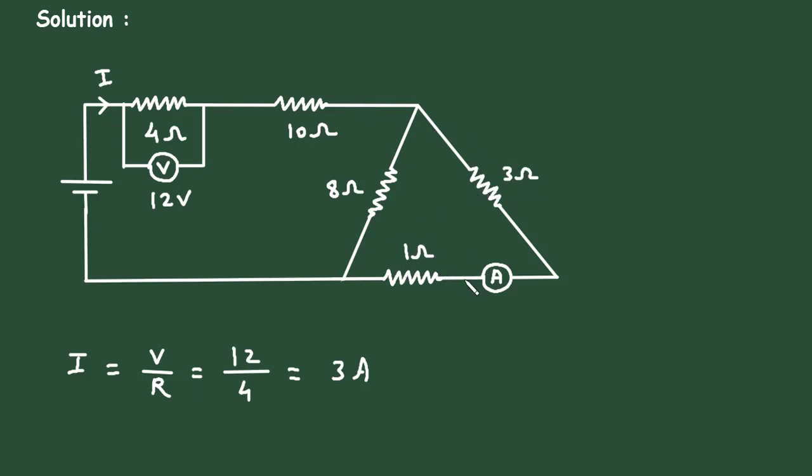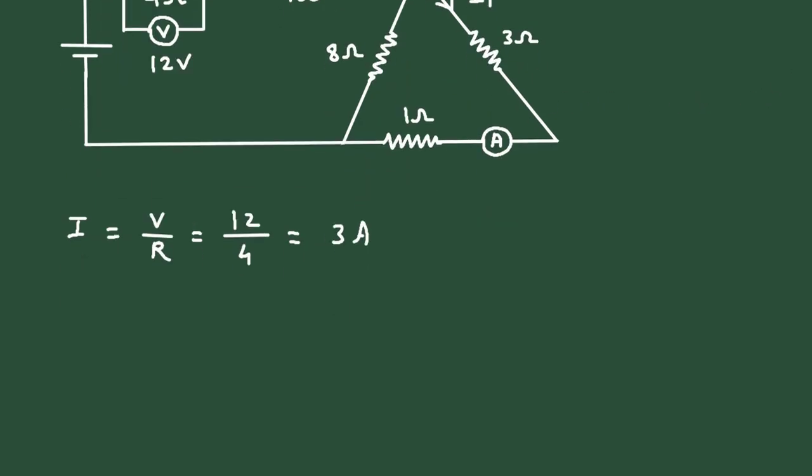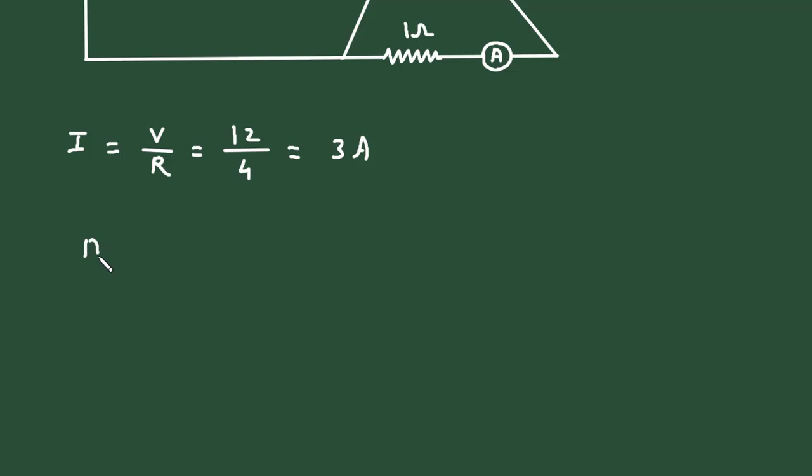Now we have to find this ammeter current. Let us say this current is current I1. So apply current division rule.